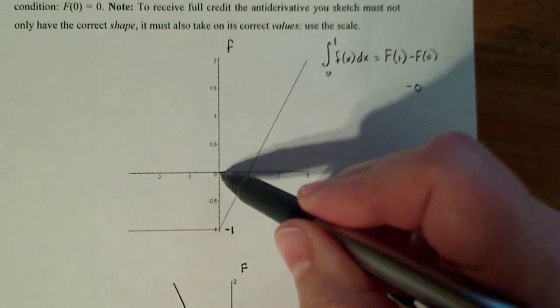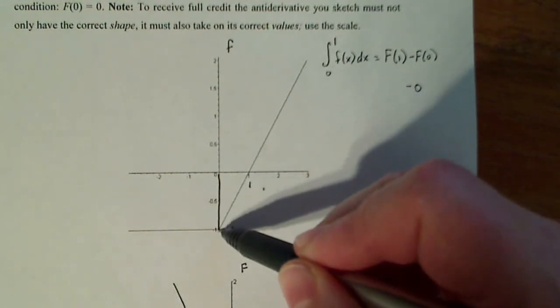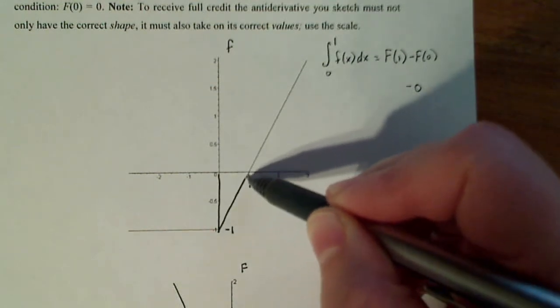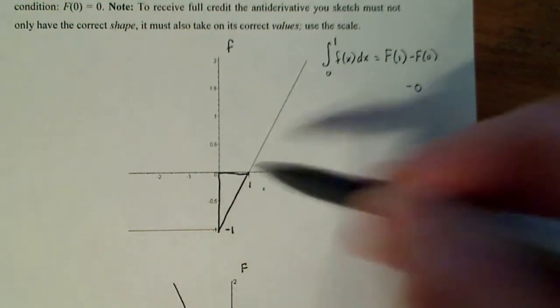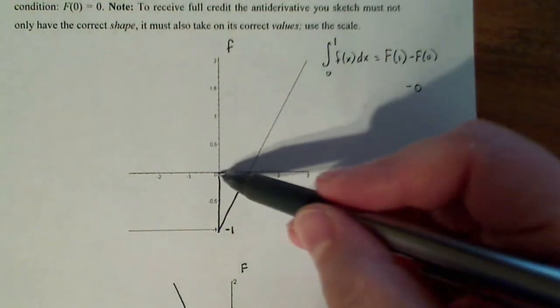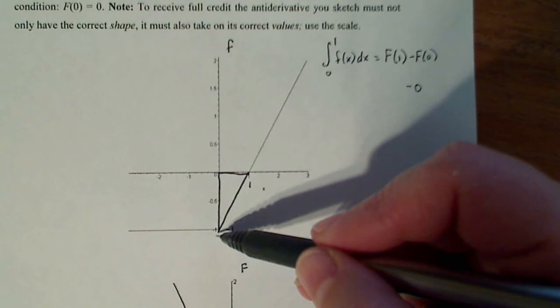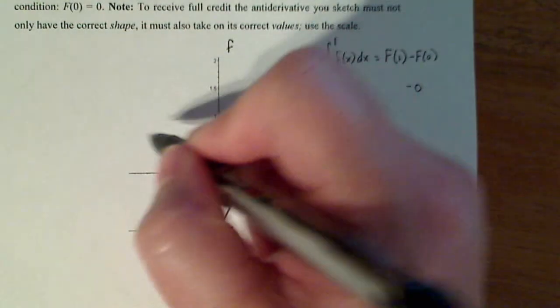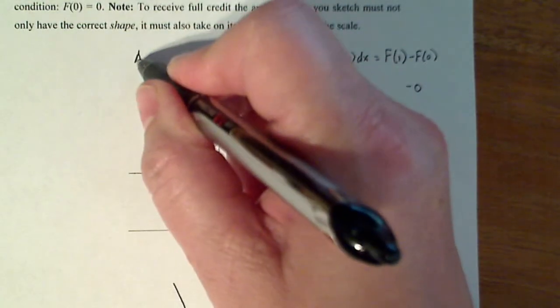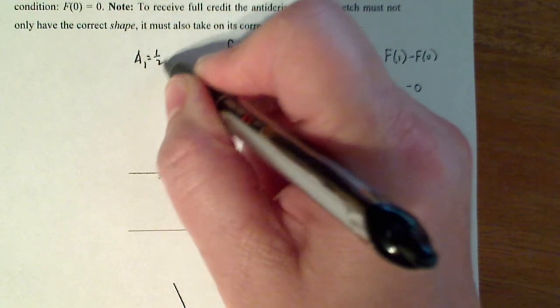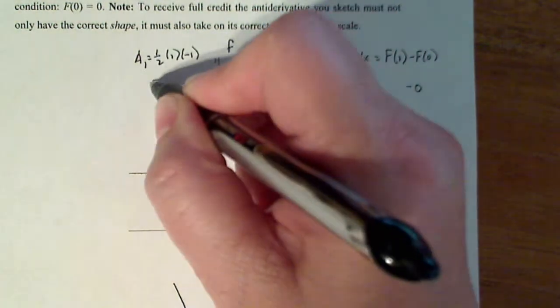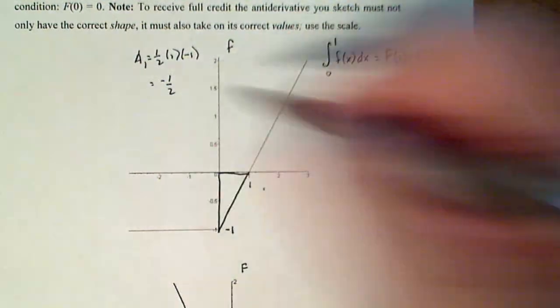That's this space right here. Now if the shape of it is a triangle, so we know how to calculate the area of a triangle. One half base times the height. My base is 1. My height is negative 1. So the area of my first triangle is one half base times height. And you're saying to yourself, how can area be negative?